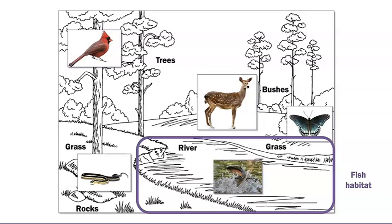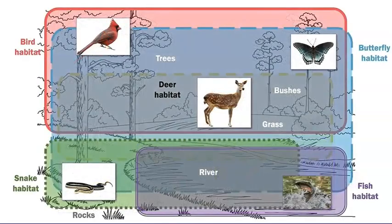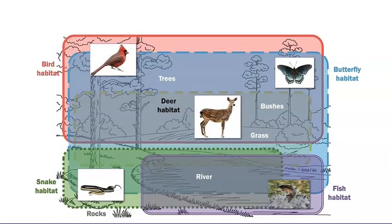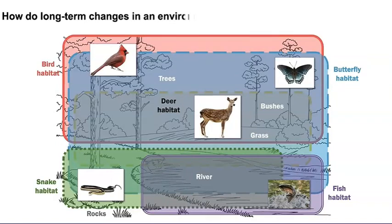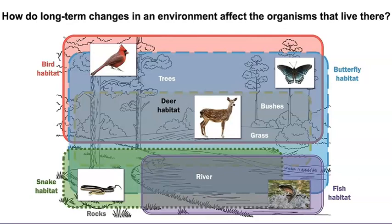Now let's see how these different habitats overlap with the larger environment. Wow, this environment is made up of so many different habitats. The forest environment includes so much more than we could see in the original illustration. Now's a good time to revisit our earlier question. How do long-term changes in an environment affect the organisms that live there?